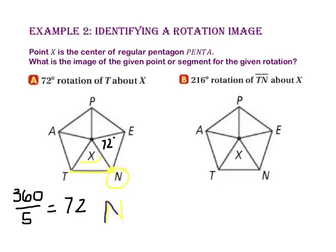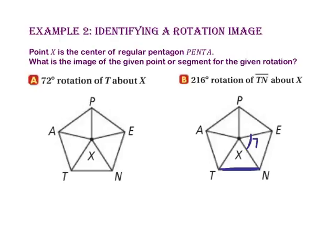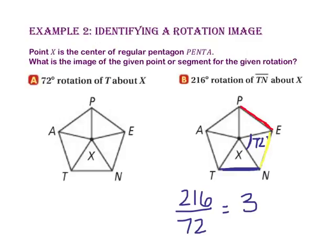So the image of point T is point N. For Part B, we want a 216 degree rotation of segment TN about point X. Each central angle is 72 degrees. To find the number of rotations, we take 216 divided by 72, which gives us three rotations. Our first rotation puts segment TN on segment NE, our second on segment EP, and our third on segment PA. So segment PA is the image of segment TN rotated 216 degrees about point X.